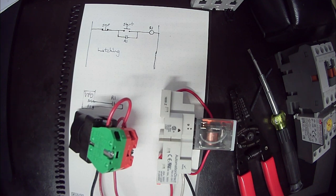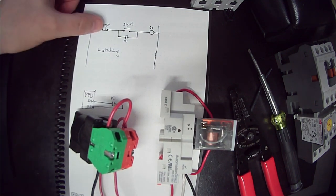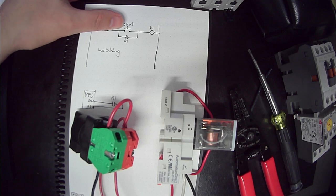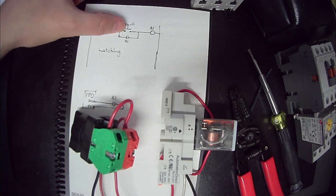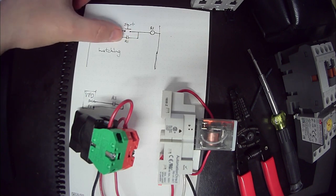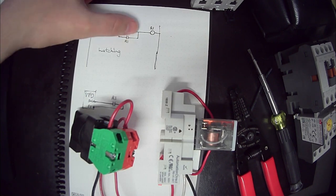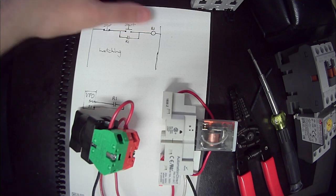Let me explain to you real quickly as to why that works. Our stop has to be before our start, because what happens is, when I press the start button, if I don't have this contact to latch it in, voltage will not continue to travel to my coil.